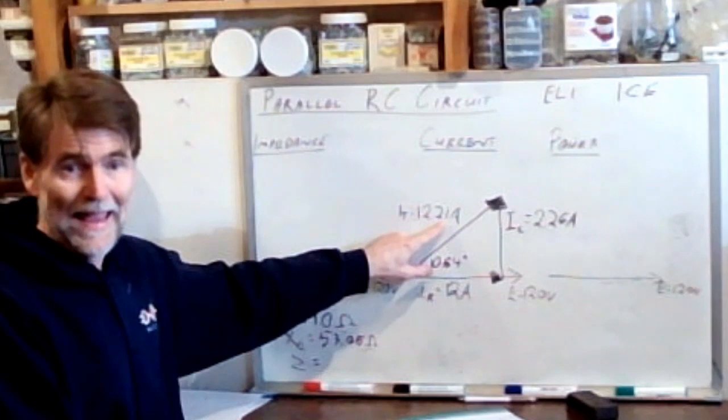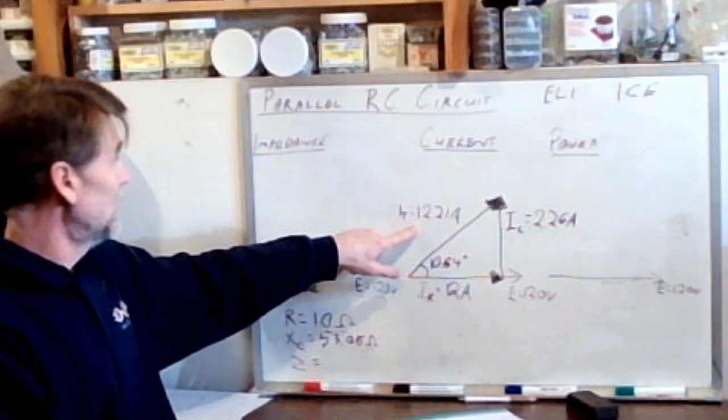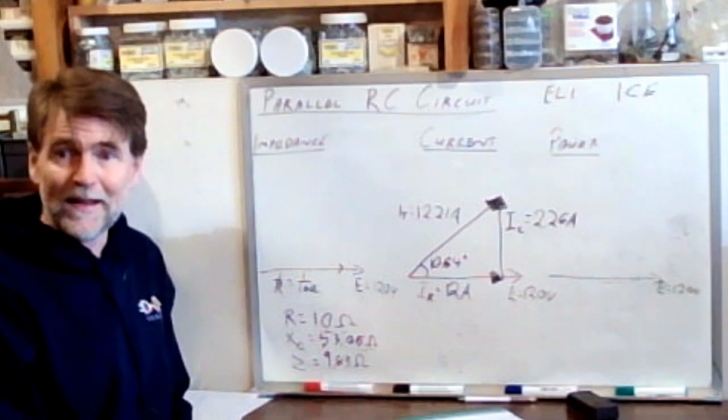We can also come back, using this 12.21 amps as the hypotenuse, we can work backwards and find Z. So Z is equal to the voltage divided by the total current in the circuit, which is 9.83 ohms.